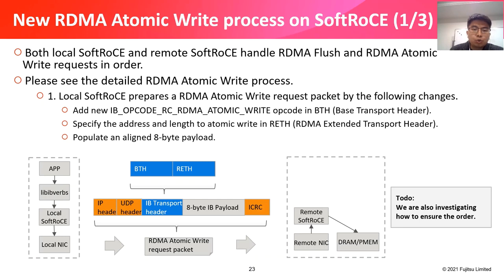Let me continue to talk about how to implement a new RDMA atomic write process on soft RoCE. Both local and remote soft RoCE handle RDMA flush and RDMA atomic write requests in order — we are also investigating how to ensure this ordering. Step 1: Local soft RoCE prepares an RDMA atomic write request packet with the new IB opcode RC_RDMA_ATOMIC_WRITE, specifies the address and length in the RDMA extended transport header, and populates an aligned 8-byte payload.